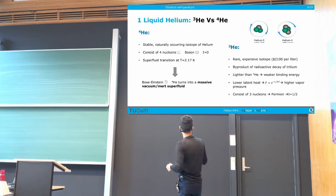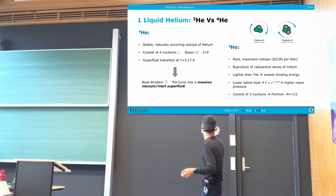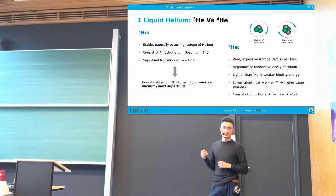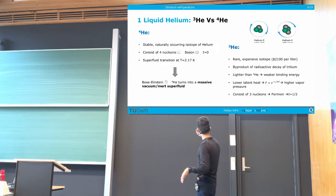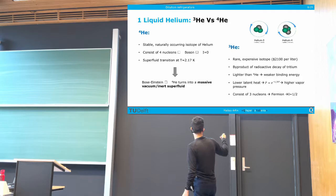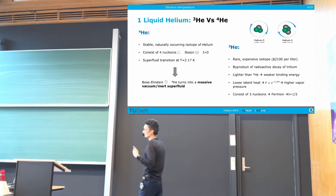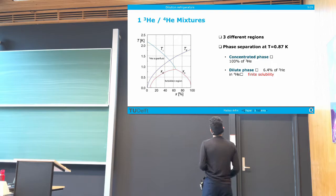Helium-3 is a whole different story. It is a very expensive isotope of helium, because it is difficult to obtain — it is harvested as a byproduct of the radioactive decay of tritium, which is an isotope of hydrogen. It is lighter than helium-4 and has a lower latent heat, which means a higher vapor pressure. And it is not a boson — it is a fermion, so it obeys Fermi-Dirac statistics.